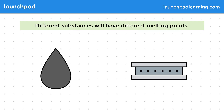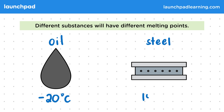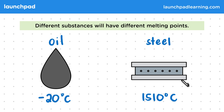For example, the melting point of oil is approximately minus 20 degrees C and the melting point of steel is approximately 1510 degrees C. Because of these melting points, oil will be a liquid at room temperature whereas steel will be a solid.